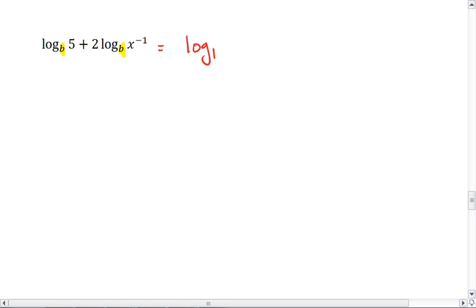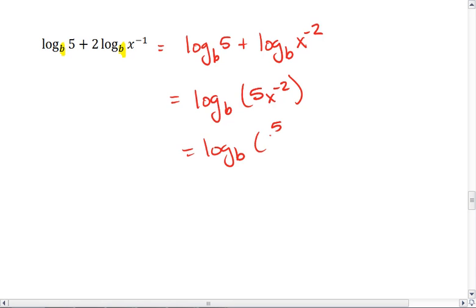We get log base b of 5 plus log base b of x to the negative 2, which gives us log base b of 5 times x to the negative 2. And that's the same as log base b of 5 over x squared. That's our final answer.